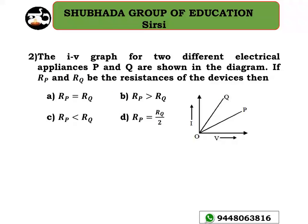Next problem: the I-V graph for two different electrical appliances P and Q are shown in the diagram. If Rp and Rq are the resistances of the devices, what is the relationship between them? Let me take a general case — here is the graph with V on the x-axis and I on the y-axis, with a line at angle theta.